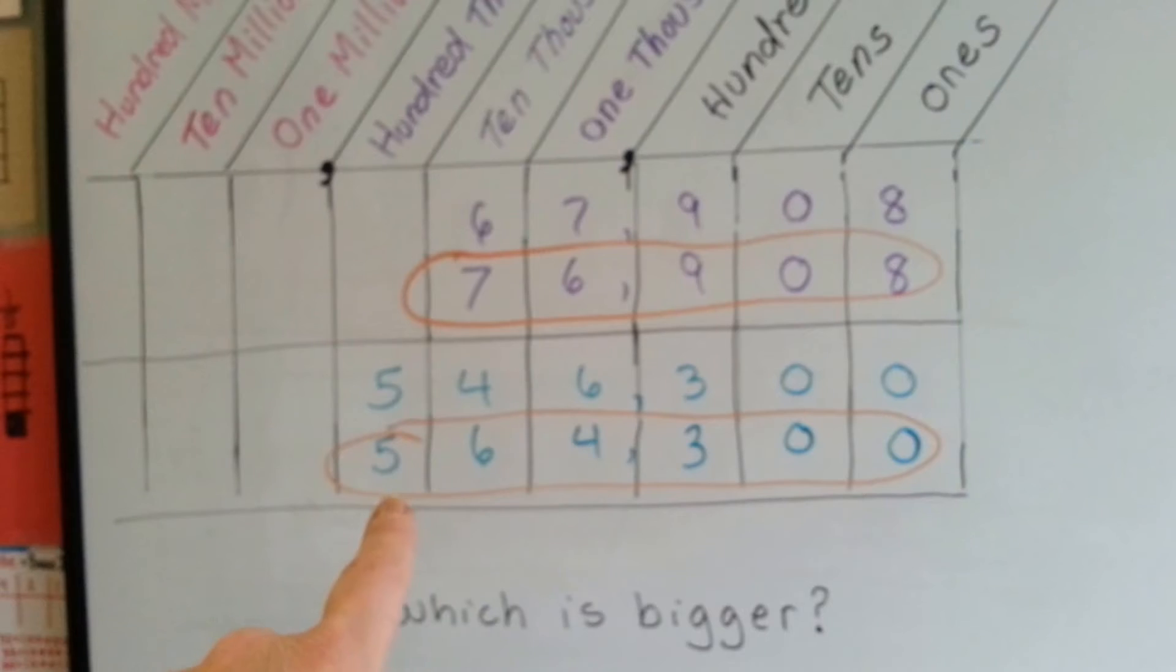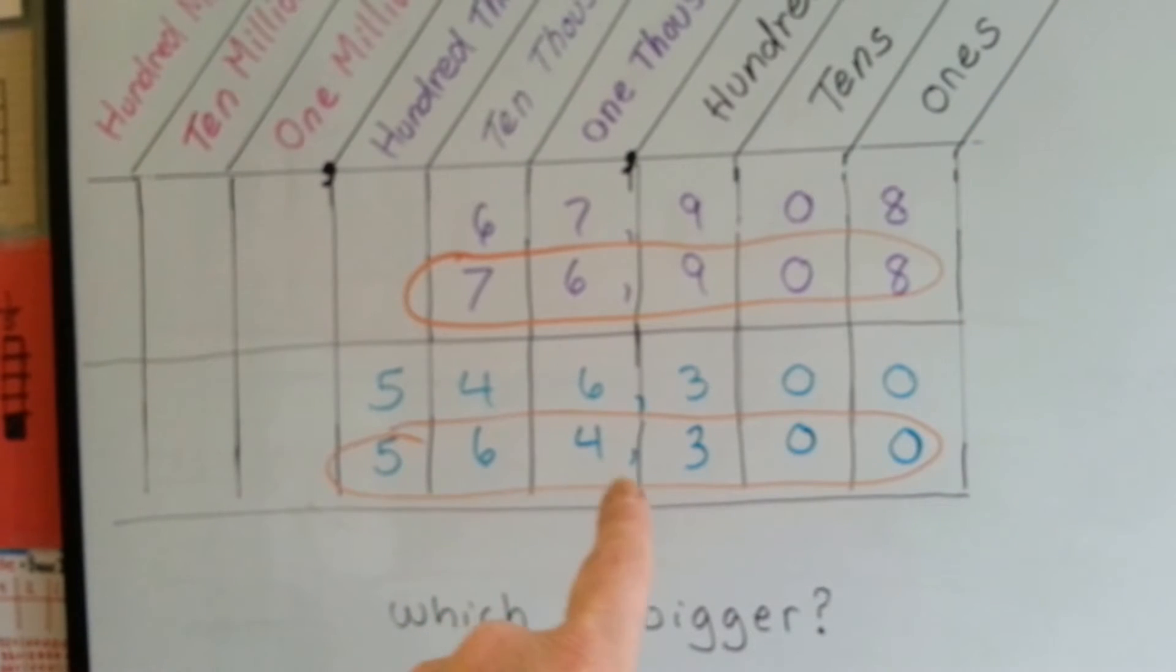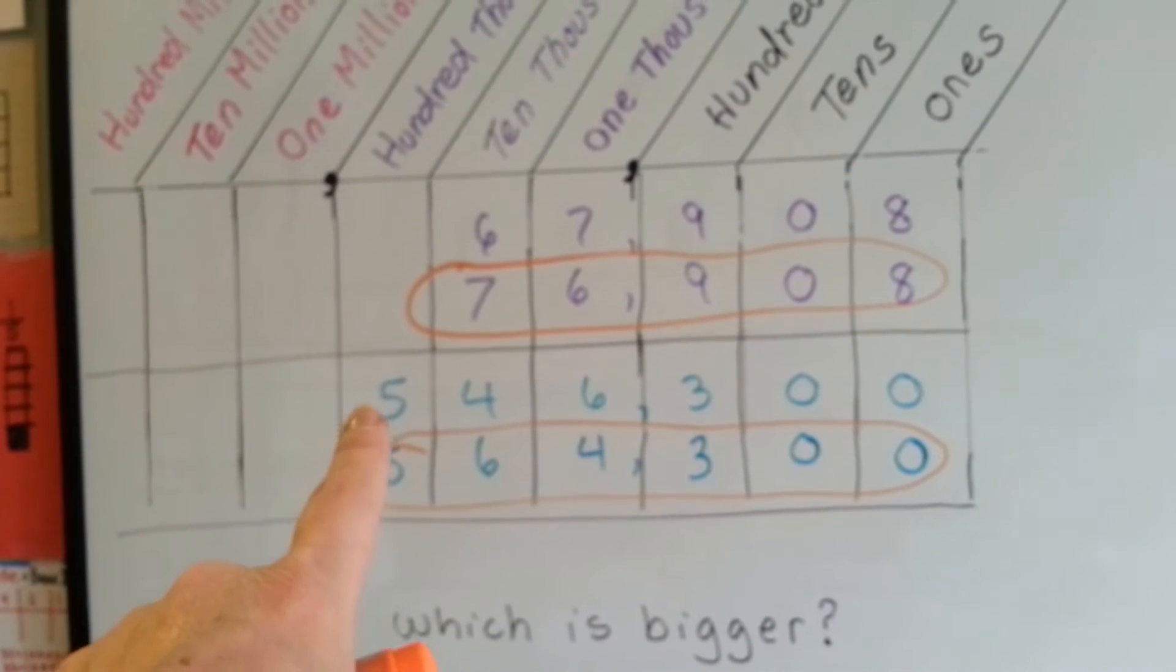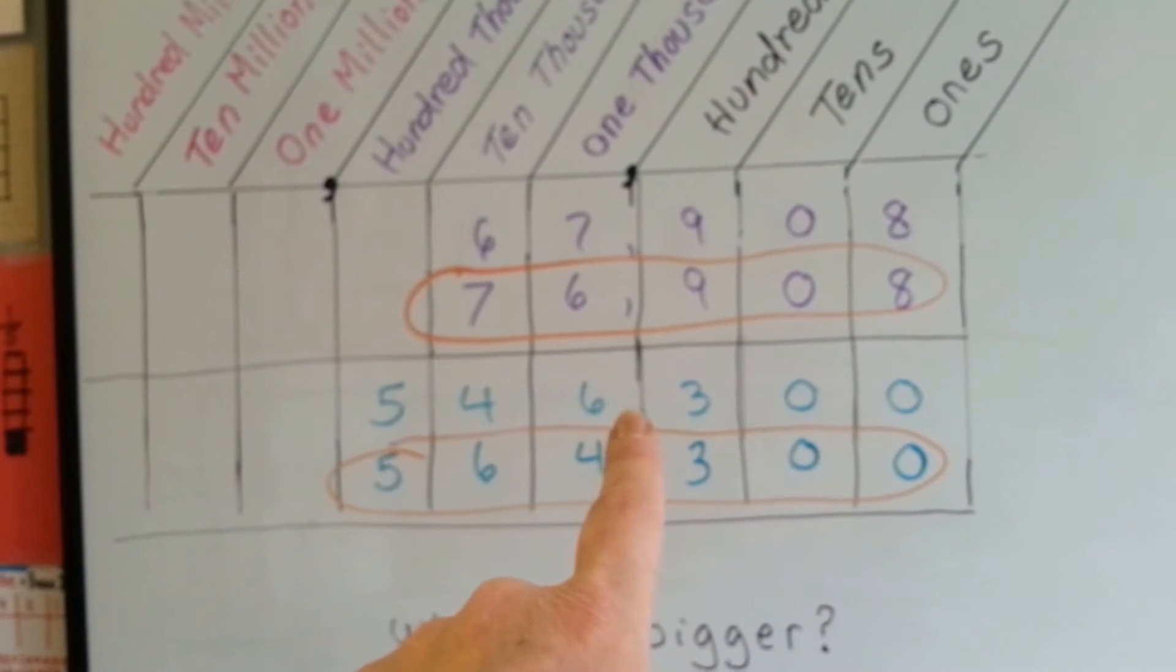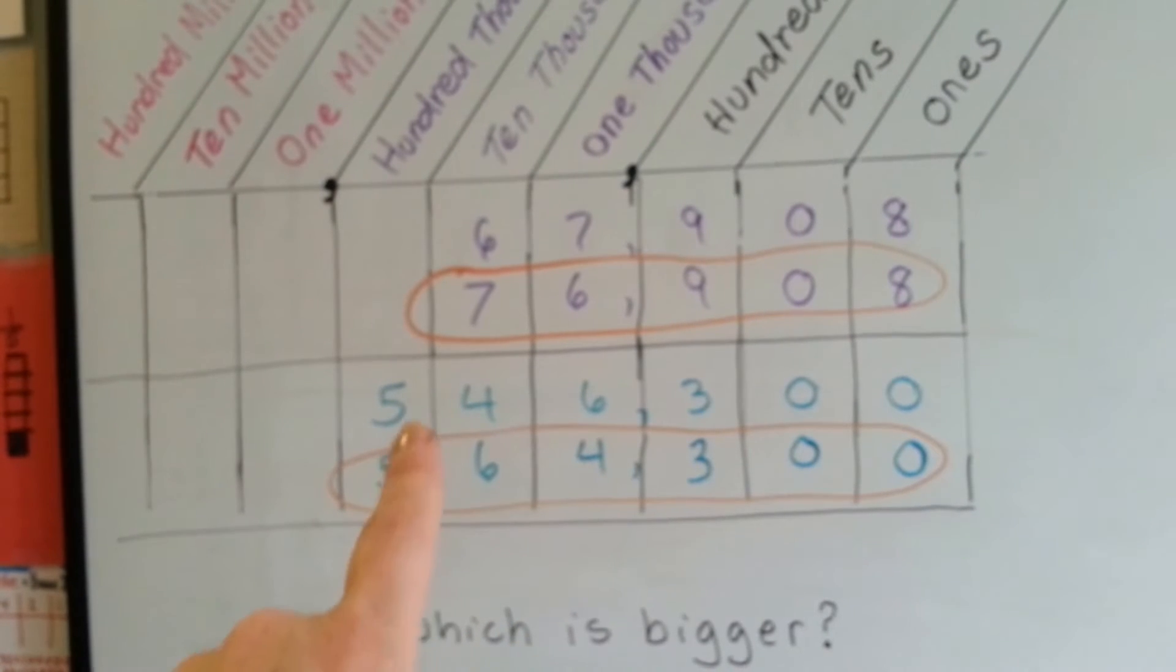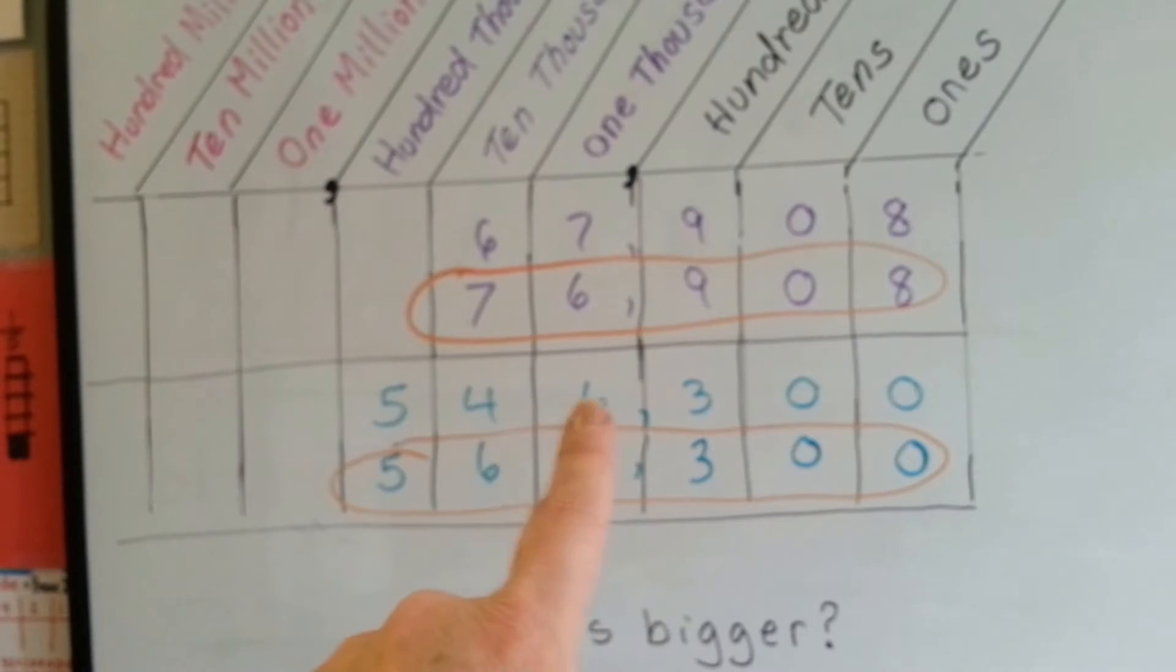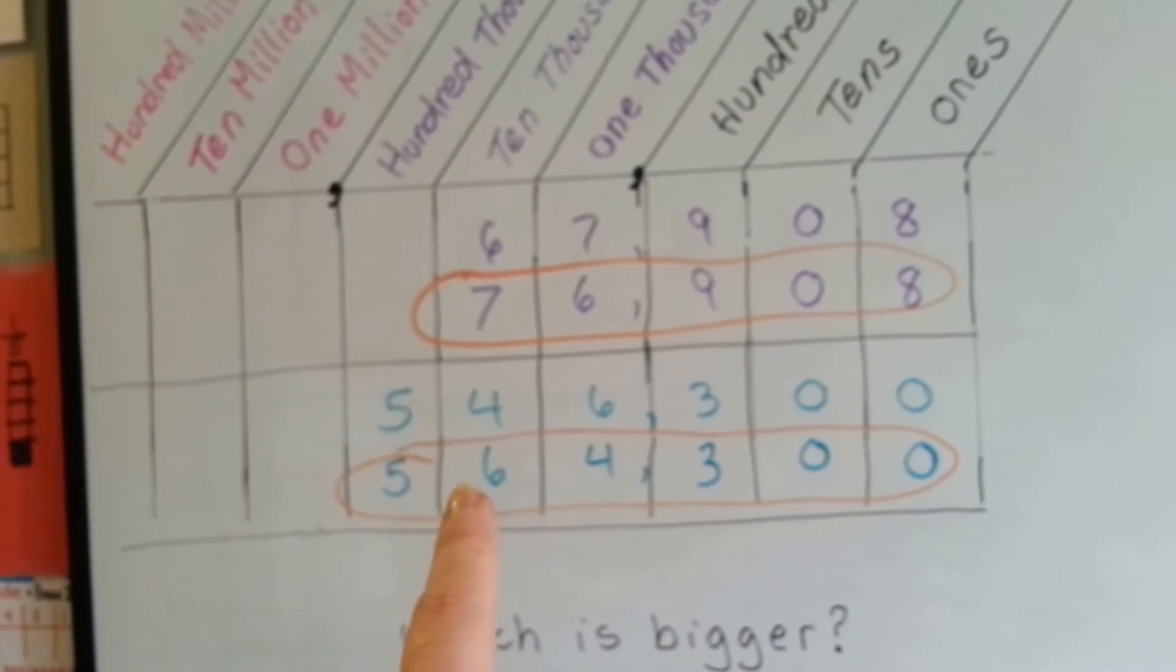This one is 564,300. This one is 546,300. 64 is a lot bigger than 46. So yeah, that one's bigger.